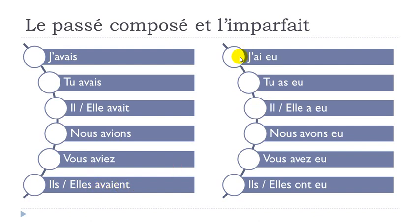For the passé composé of avoir, you use avoir at the present form plus the participe passé. The participe passé is eu, pronounced U — this is an exception. So: j'ai eu, tu as eu, il a eu, elle a eu, nous avons eu, vous avez eu, ils ont eu, elles ont eu. Note the double liaisons in nous avons eu and vous avez eu, and the Z liaison in ils ont eu and elles ont eu.